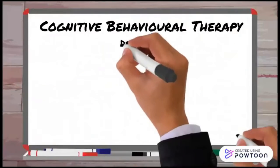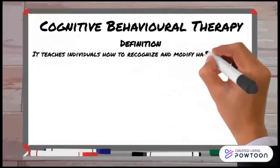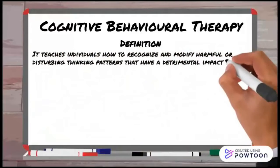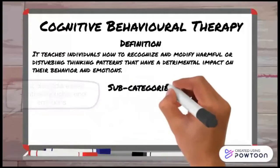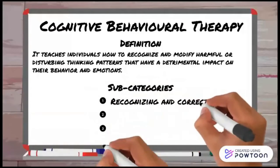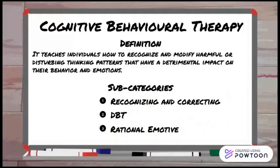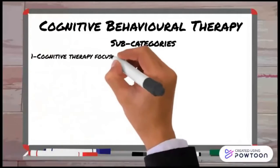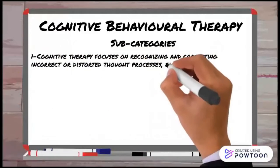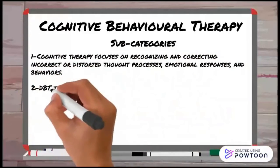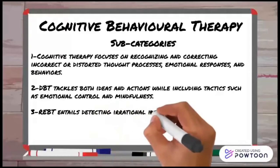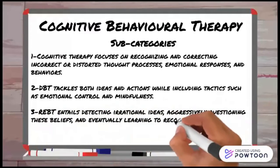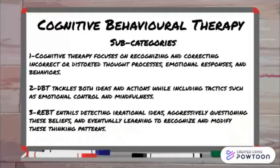There is also a type called cognitive behavioral therapy. It teaches individuals how to recognize and modify harmful or disturbing thinking patterns that have a detrimental impact on their behavior and emotions. It is similar to behavioral therapy, but it also addresses negative thoughts and emotions. The subcategories are cognitive therapy (recognizing and correcting), DBT, and Rational Emotive Behavior Therapy (REBT). Cognitive therapy focuses on recognizing and correcting incorrect or distorted thought processes, emotional responses, and behaviors. DBT tackles both ideas and actions while including tactics such as emotional regulation and mindfulness. REBT entails detecting irrational ideas, aggressively questioning these beliefs, and eventually learning to recognize and modify these thinking patterns.